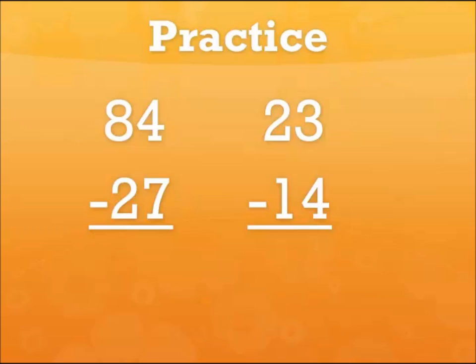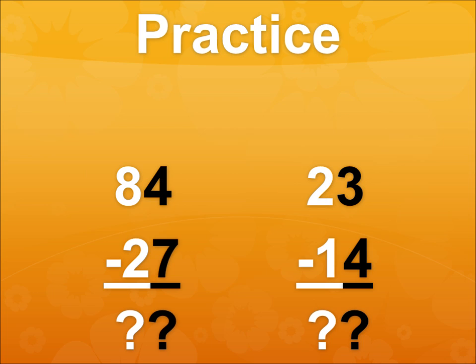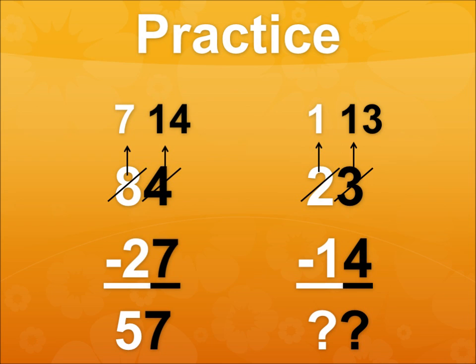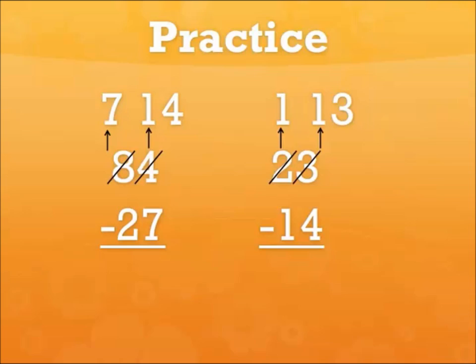Let's give it a shot with these practice problems. Now I'm going to go over the steps that you should have taken to get your answers. In the first problem, since 7 is bigger than 4, you'd go over next door to the 8 and borrow 10, making it a 7, and give it to the 4, making it a 14. Then you would subtract 14 from 7, and 7 minus 2.